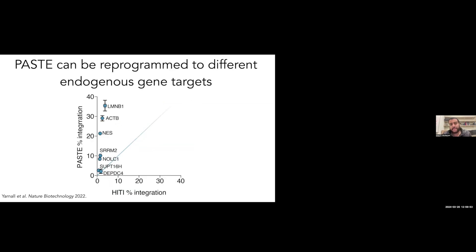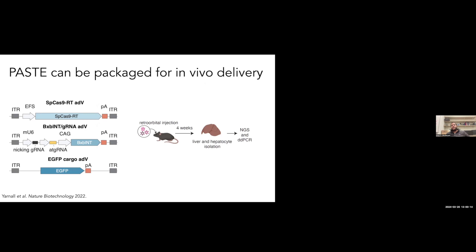We also compared PASTE across different endogenous sites to non-homologous end joining insertion, sometimes called HITI, and even on validated HITI sites we were getting better efficiency. I don't have time to go into the fidelity of insertion, but PASTE, because it's a dual nicking approach, is really high fidelity versus other approaches like HITI and HDR which have a lot of indels.